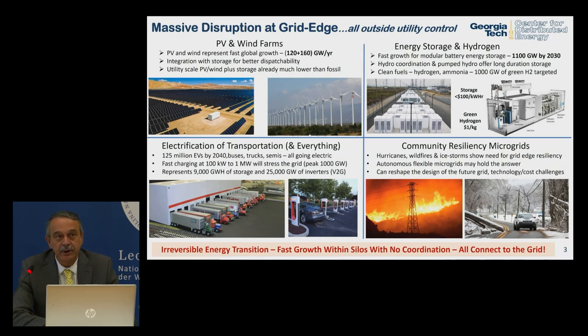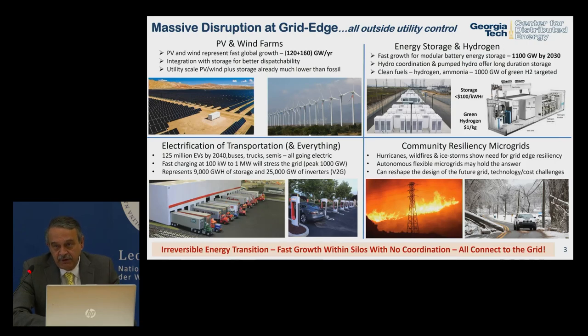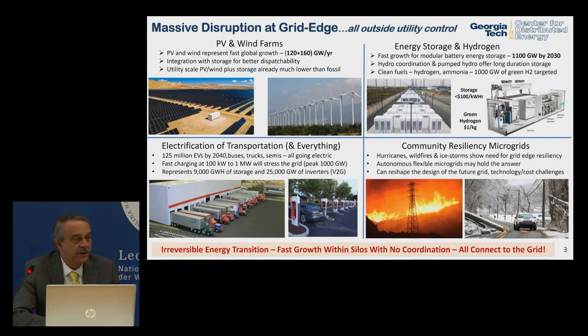This is an irreversible energy transition. There's very fast growth within each of the silos — PV, storage, EVs — with no coordination whatsoever between them. They all connect to the grid: best of luck.